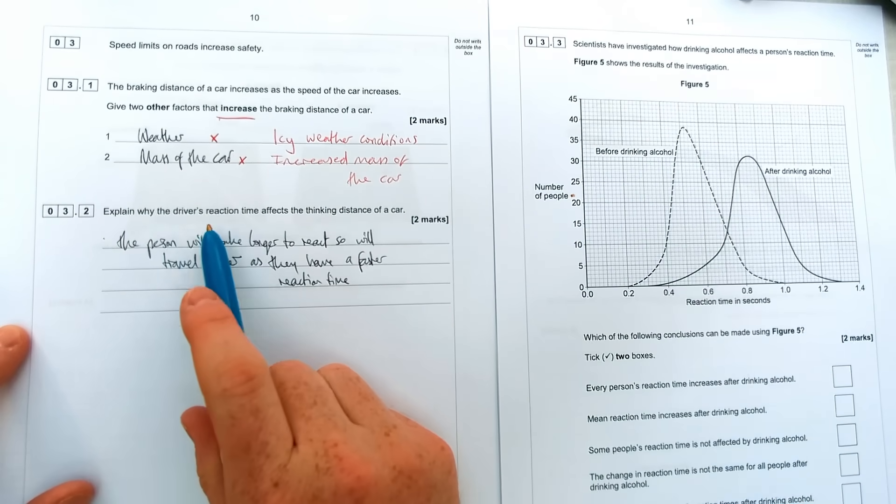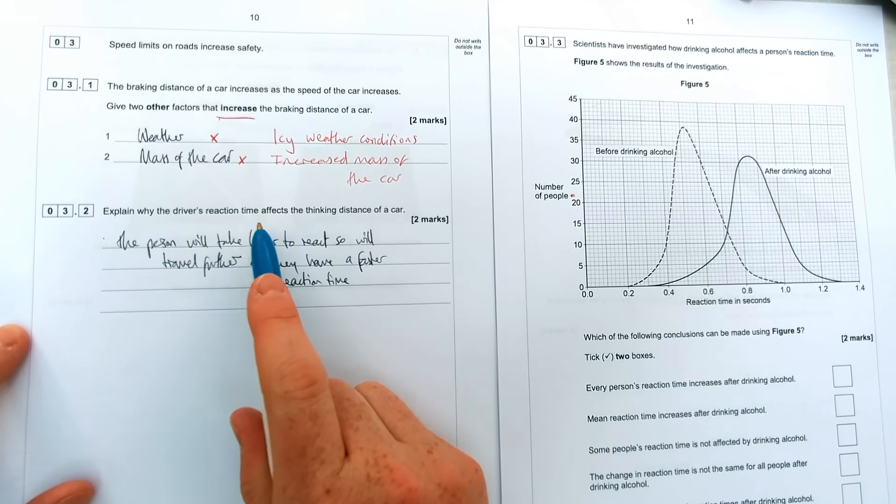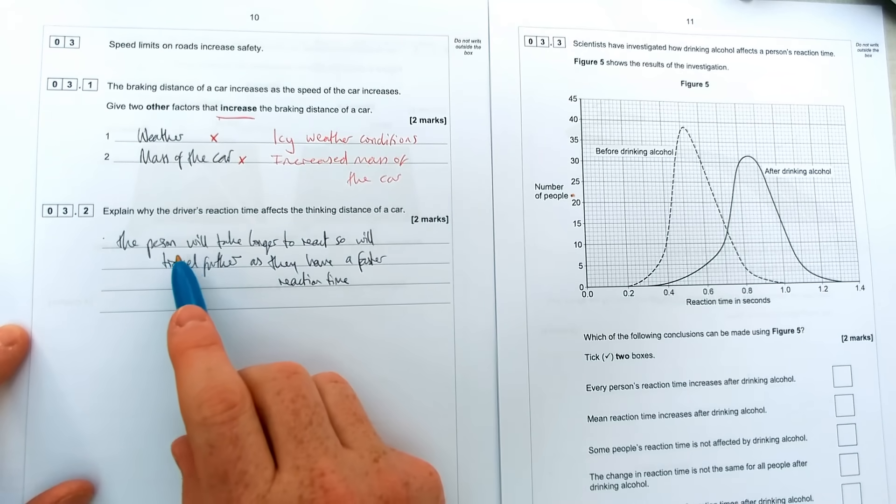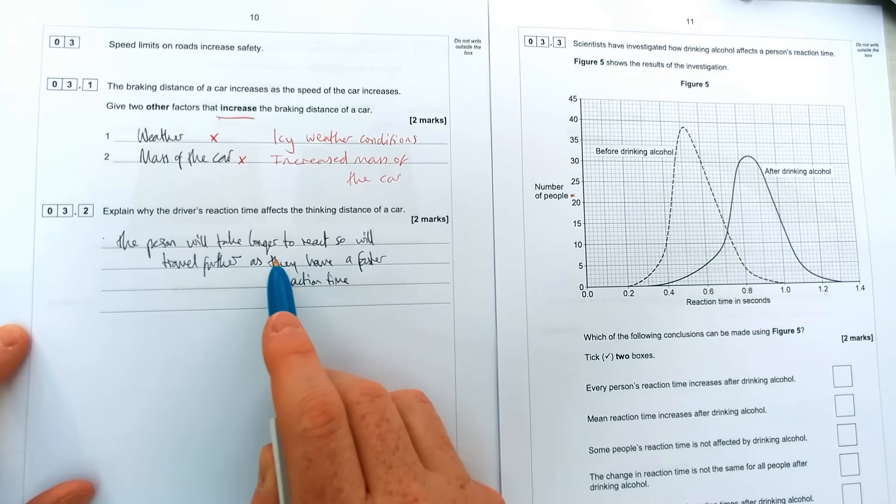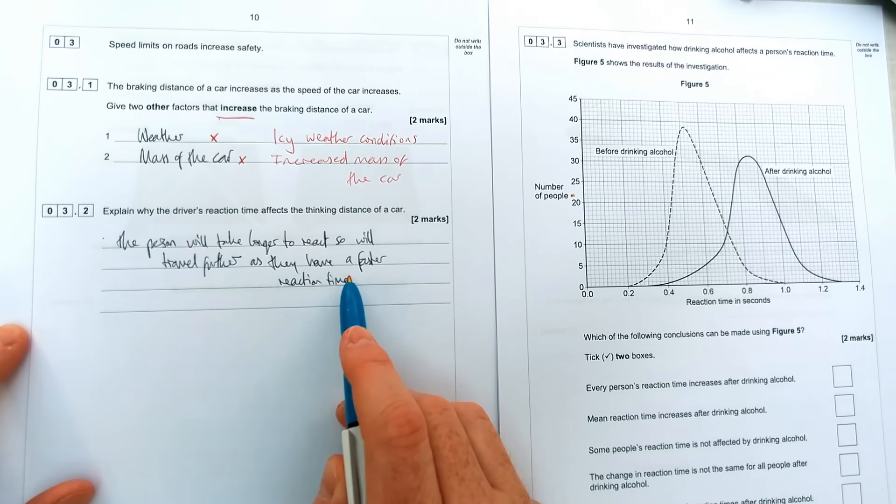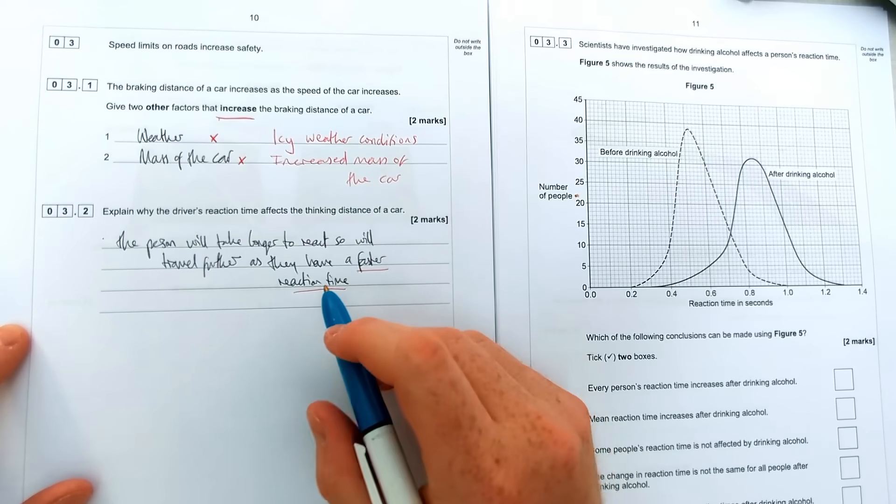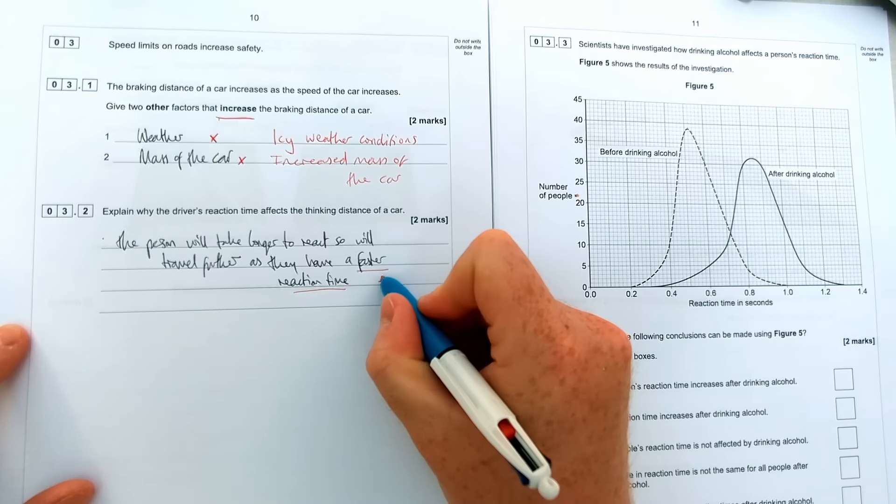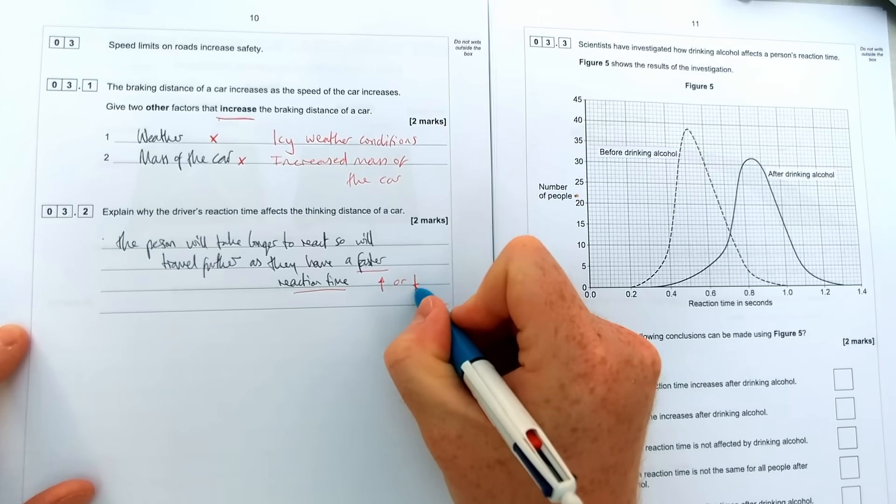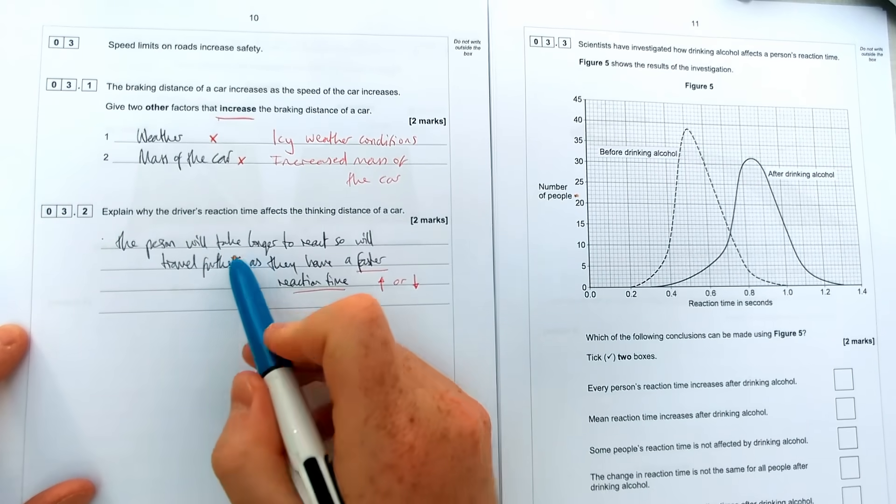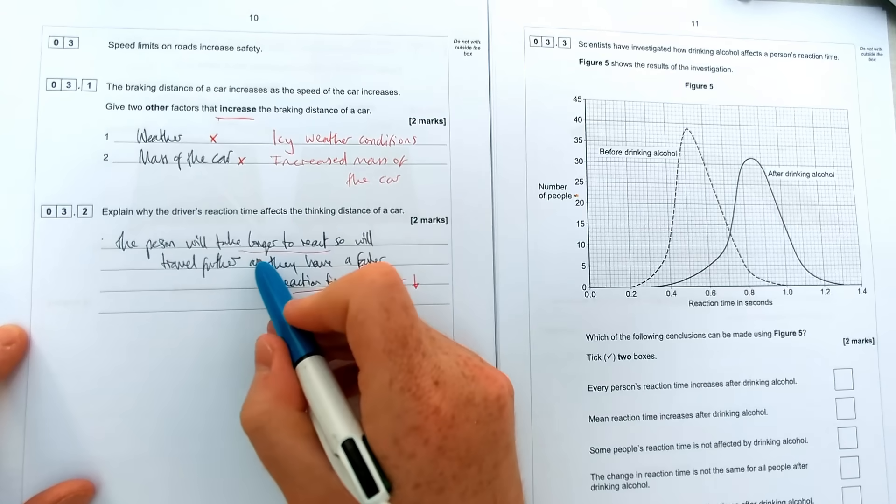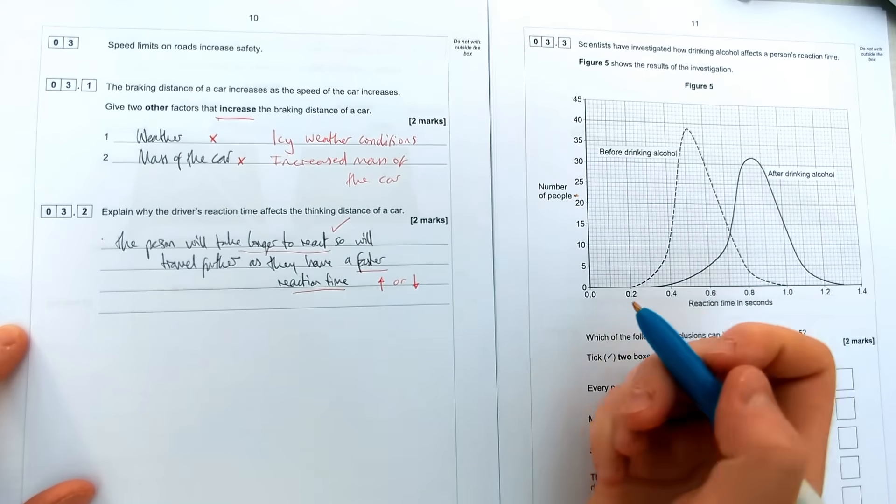Let's have a look at the question down below. So why does the person's reaction time affect the thinking distance of the car? The person says the person will take longer to react or travel further as they have a faster reaction time. Now, number one, you might have seen it in videos previously: never ever say a time is faster or slower. You've got to say either it's increased or decreased. But luckily earlier in the answer they have said it takes longer to react, so that would be one mark for this question.